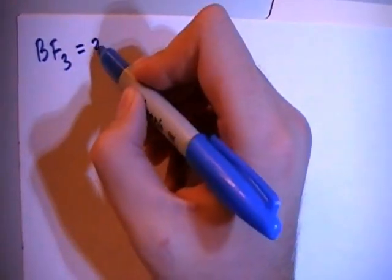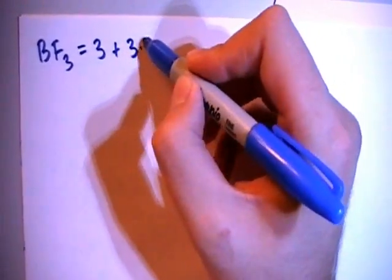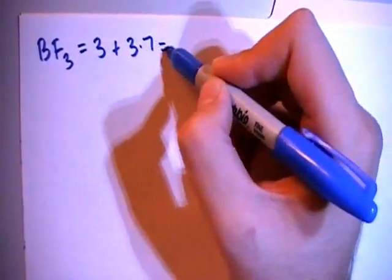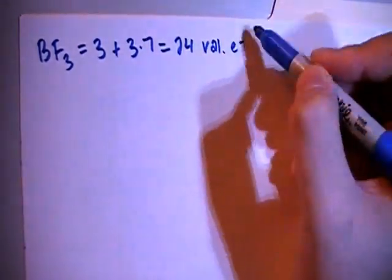That's going to give us 3 valence electrons from the boron plus 3 fluorines each with 7 valence electrons for a total of 24 valence electrons.